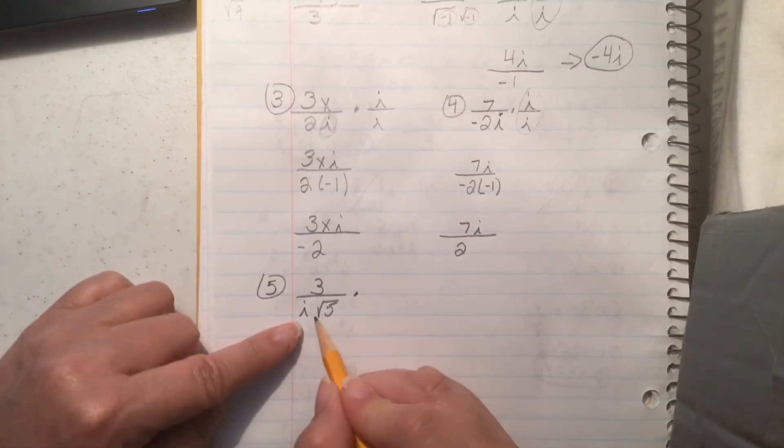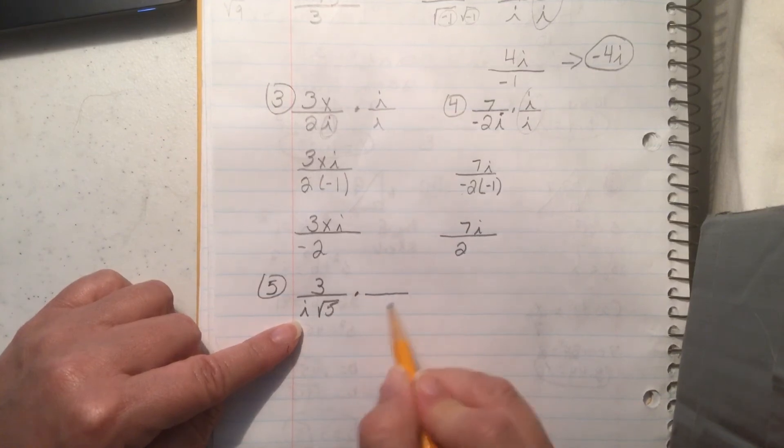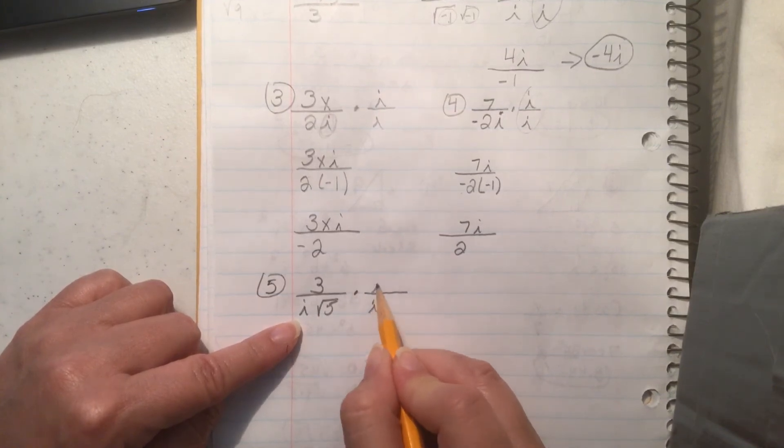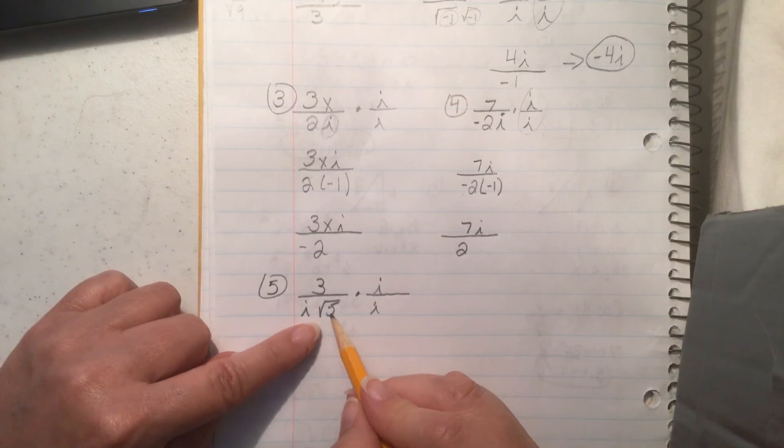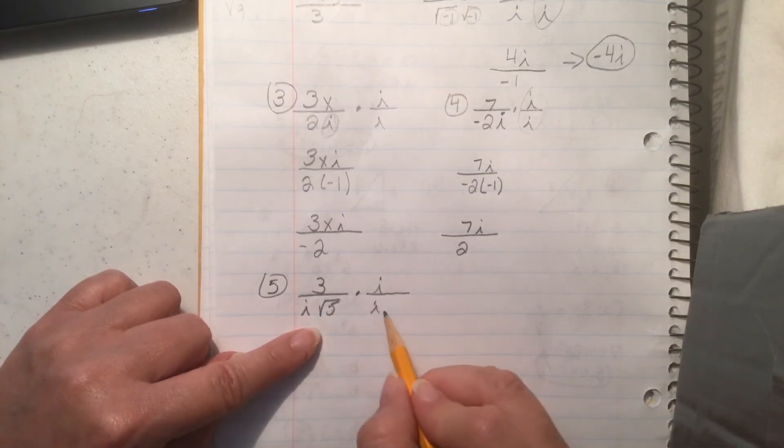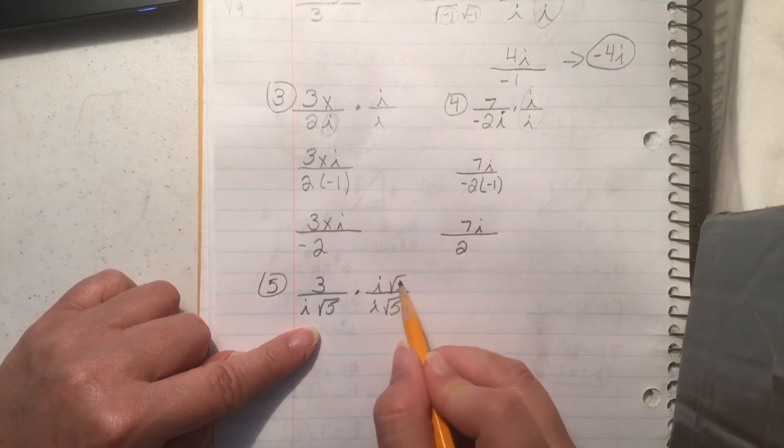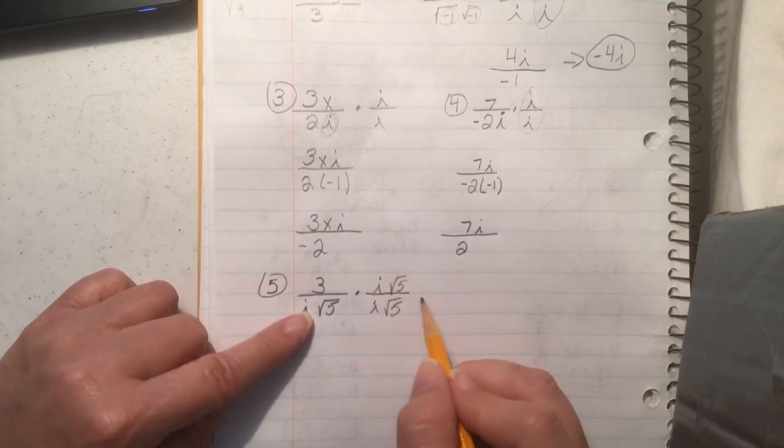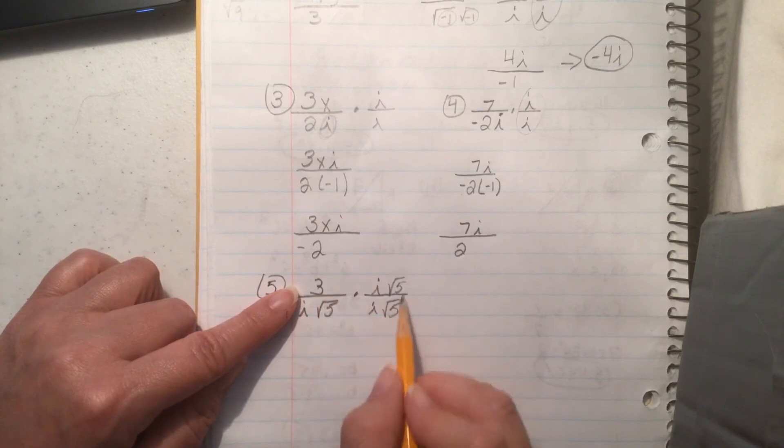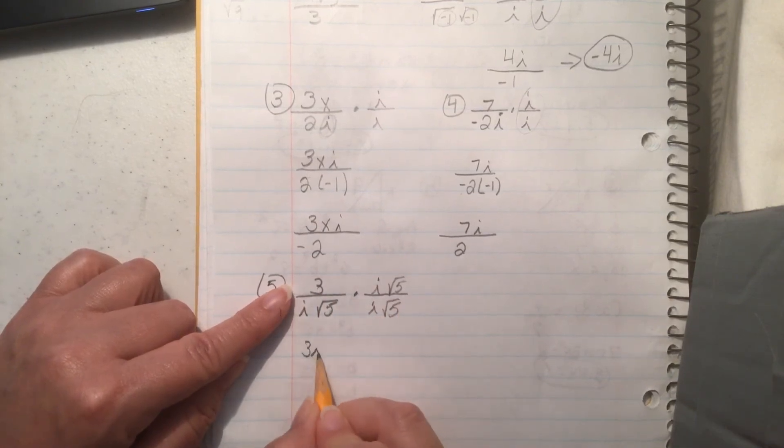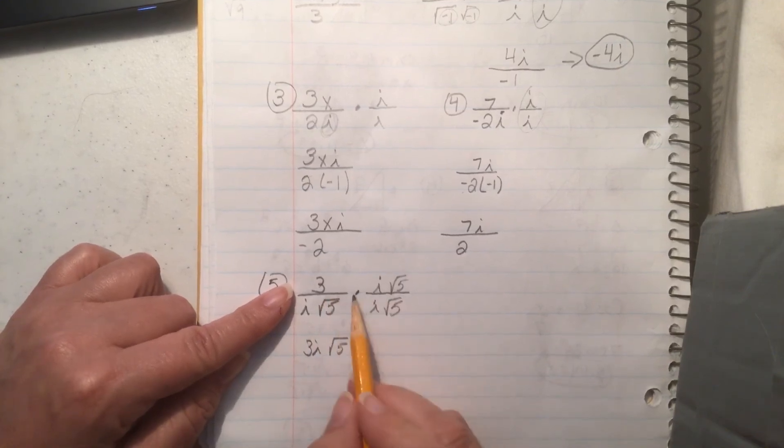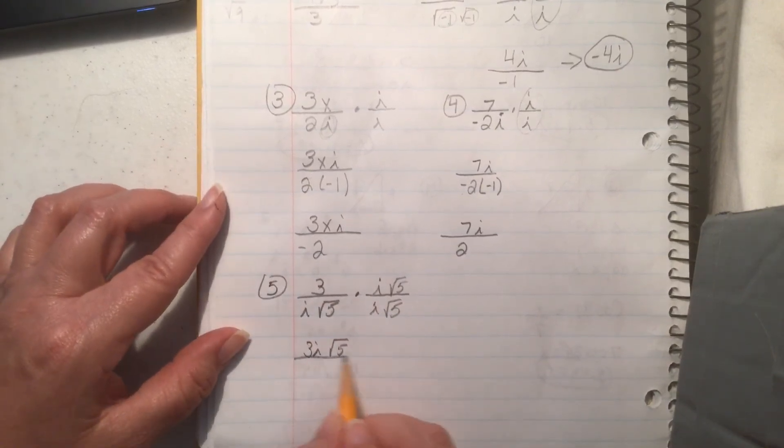Alright, so first of all cannot have the i on the bottom so we're going to have to multiply the top and bottom times i but we also can't have the square root of 5 on the bottom so we're going to have to multiply the top and bottom by the square root of 5 as well. Ta-da! Alright, so let's do this. That's going to give me 3i times the square root of 5 on the top. Nothing I can combine there. It just is what it is. Over